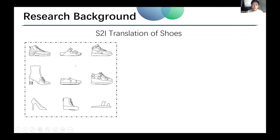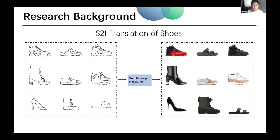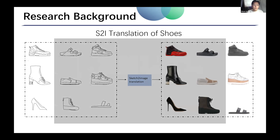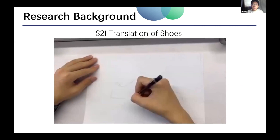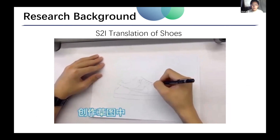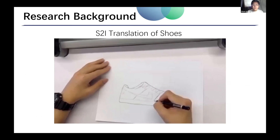As we can see, human hand-drawn sketches are highly concise and abstract. They are widely used in the field of design. The sketch-to-image translation generates real natural images whose content and style are consistent with the input sketches. This can assist designers to visualize the design products quickly and intuitively. This is a video about sketch-to-image translation of shoes, demonstrating the potential of this technology in shoes design.